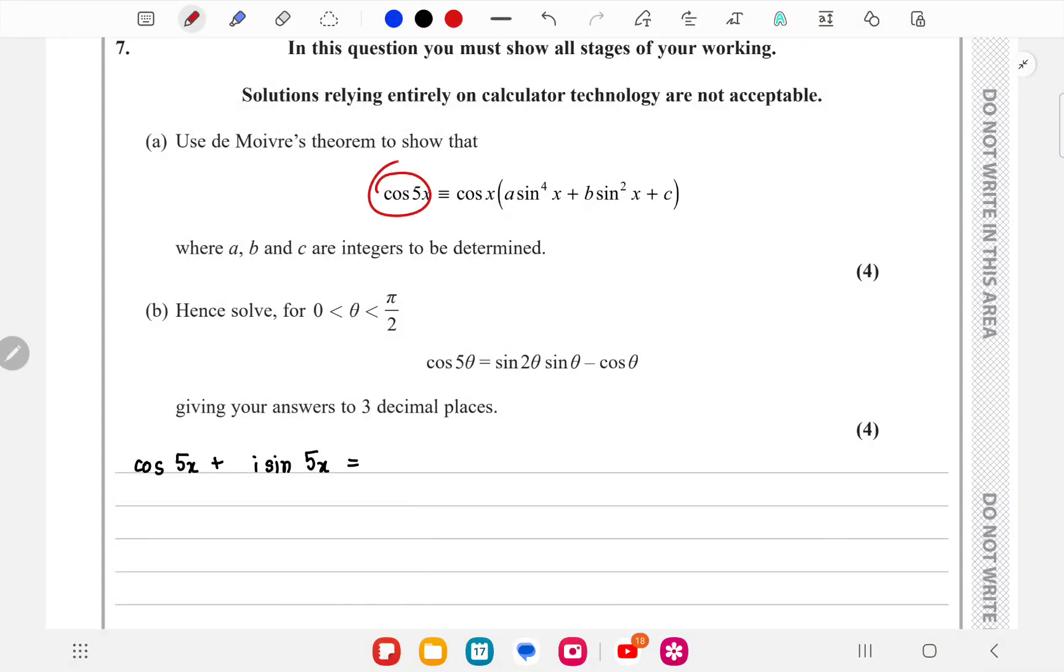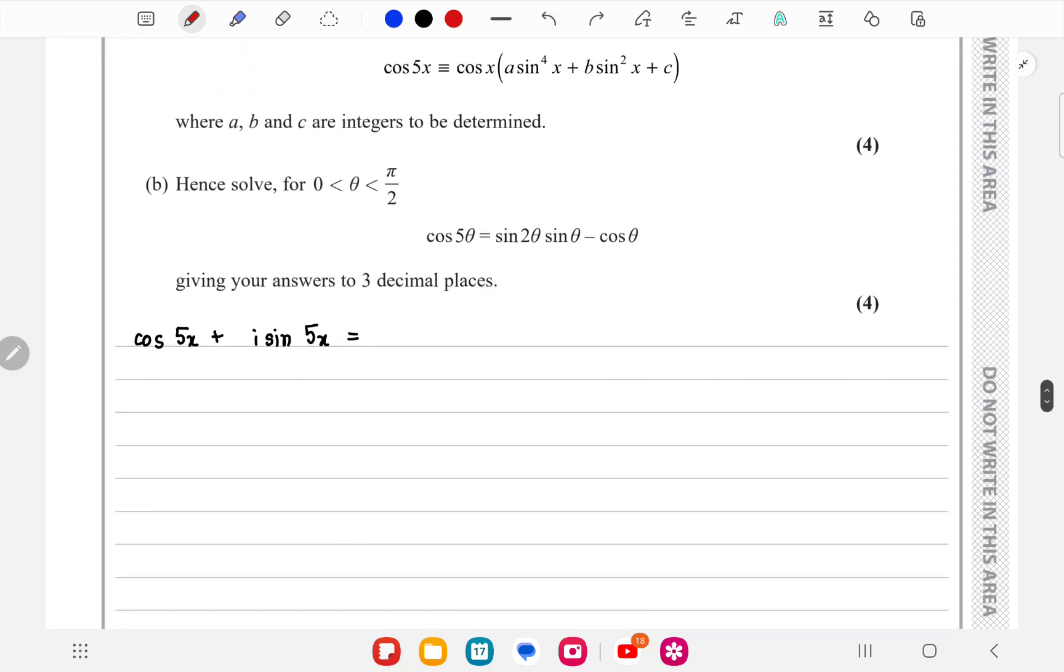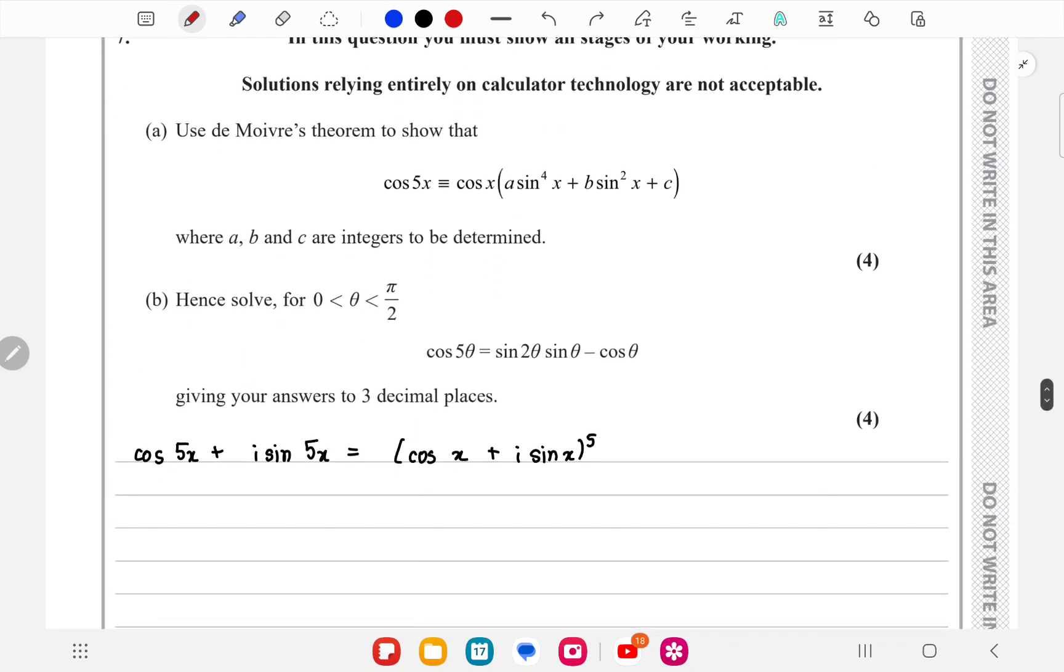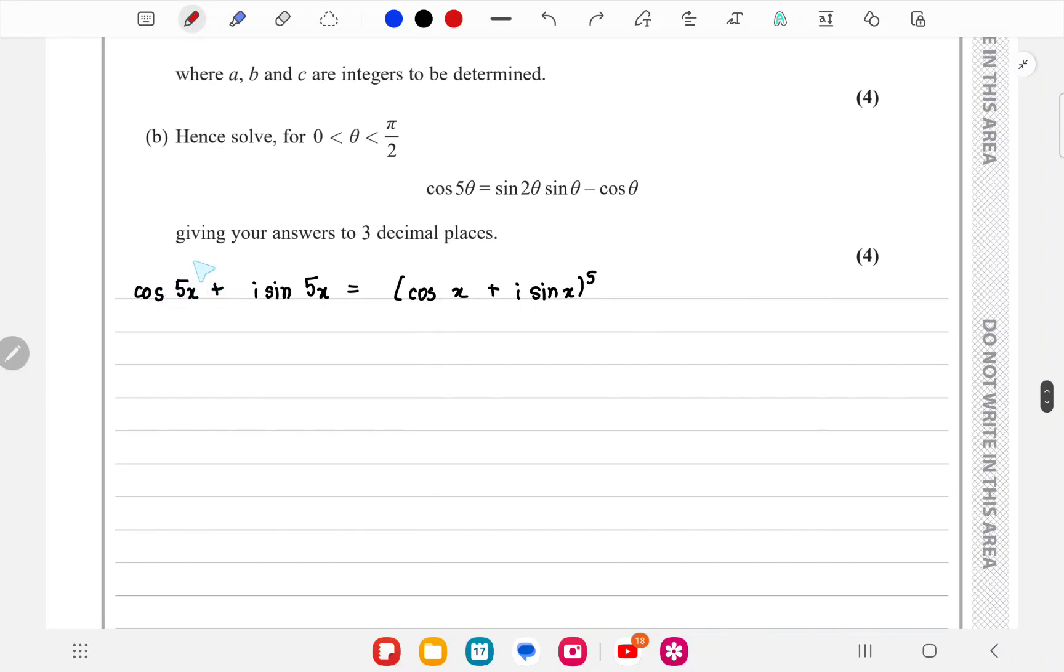We have cos ax or sin ax and we have to show that in powers of sine or cos. We'll write this and it's basically De Moivre's theorem, so we'll use De Moivre's theorem.